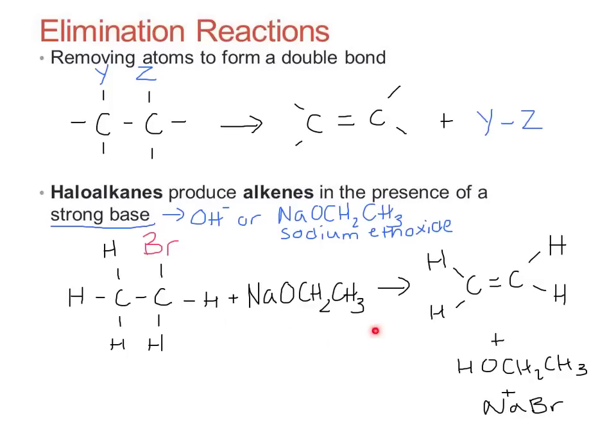I've used sodium ethoxide in this example with bromoethane, and you can see our halogen atom is eliminated, and we have a carbon-carbon double bond in our product. Our product, with two carbons and a double bond, is ethene.